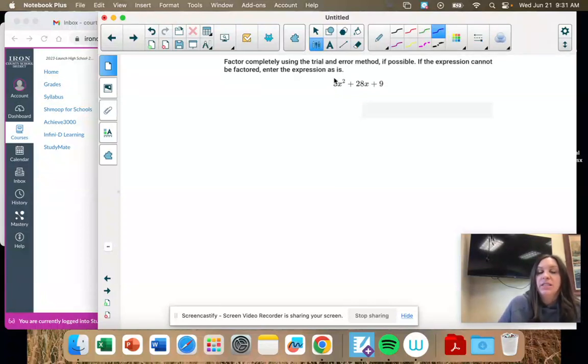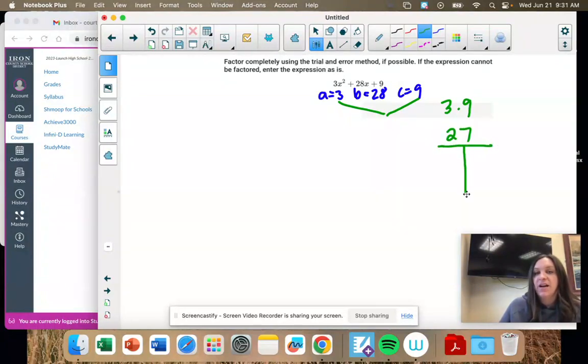So our next step is to identify A, B, and C. A is 3, B is 28, and C is 9. And we multiply A times C. So 3 times 9 is 27. And we're going to find factors of 27 that add or subtract to 28.